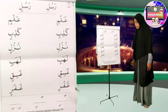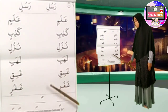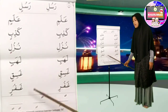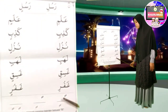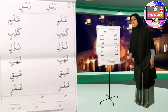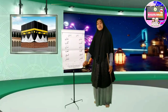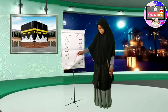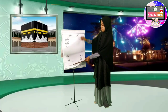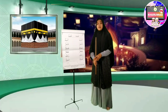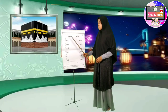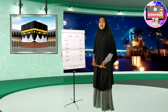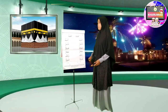Nah, paling bawah sekali: fathatain, kasrotain. Fathatain, kasrotain. Kasrotain, kasrotain. Sama-sama: fathatain, kasrotain. Kasrotain, kasrotain. Selanjutnya silahkan dibuka tilawatinya halaman 14. Kita belajar tentang domatain — kalimat atau huruf yang bertanda baca domatain, dibacanya 'un'. Seperti ini.